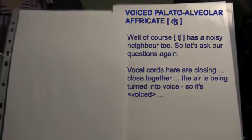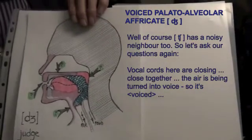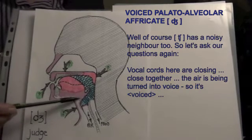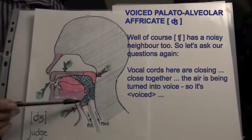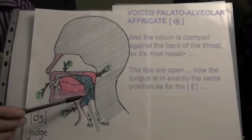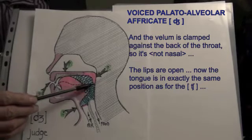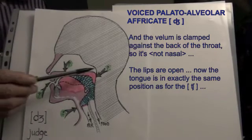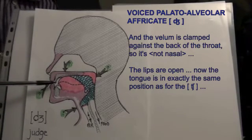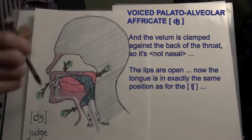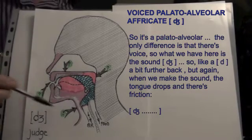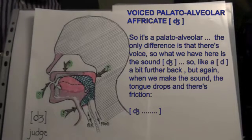Of course, ch has a noisy neighbour too. Let's ask your questions again. The vocal cords here are closing, close together. The air is being turned into voice, so it's voiced. And the velum is clamped against the back of the throat, so it's not nasal. The lips are open. The tongue is in exactly the same position as for the ch, so it's a palatoalveolar. The only difference is that there's voice. So what we have here is the sound: j.